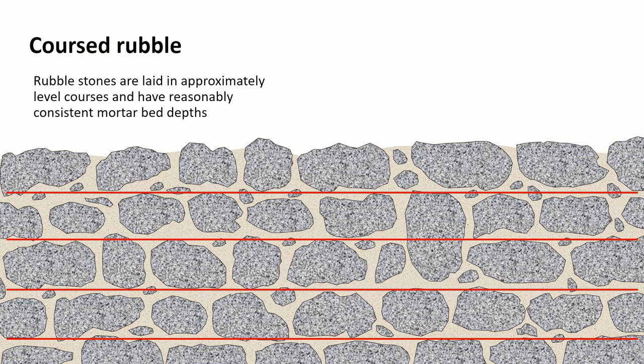Stepping up the quality ladder we get to coursed rubble and this is using the same rubble stones as previously but we're trying to lay them out in a more regular pattern where we would use a level course and have reasonably consistent mortar bed depths.